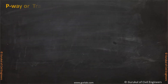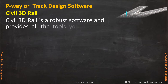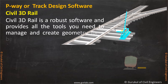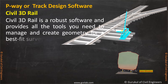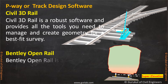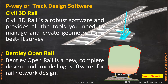P-Way or track design software. Civil 3D Rail is a robust software and provides all the tools you need to manage and create geometry for a best fit survey. Bentley Open Rail is a new, complete design and modeling software for rail network design.